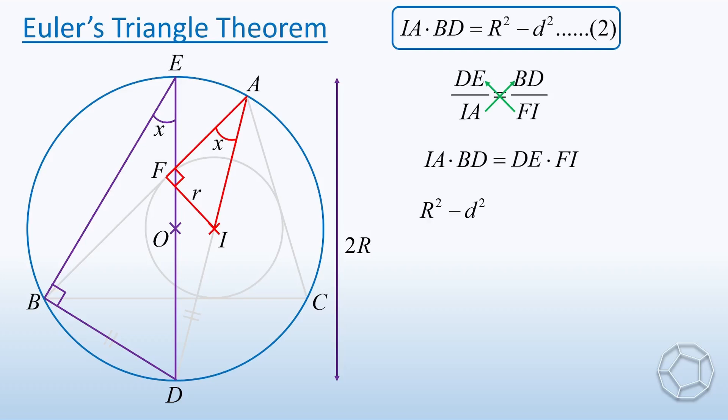For the right-hand side, we put the lengths of DE and FI inside. So it is equal to 2 large R times small r. Move the terms around to make d as the subject. We complete the proof of the theorem. d is equal to the square root of large R times bracket large R minus 2 times small r.